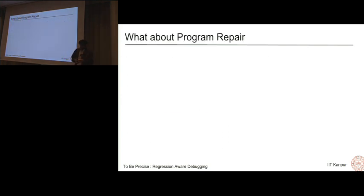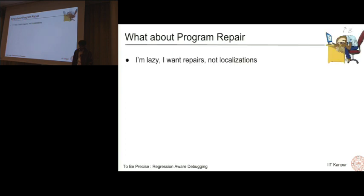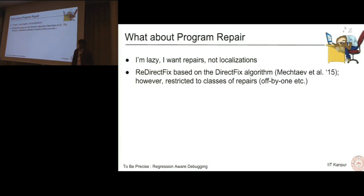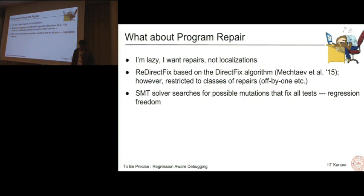We actually did not just explore bug localization, we actually also explored bug repair with Tintin. The idea is that I am lazy, I do not want localizations, I want repairs. We implemented DirectFix which is based on the DirectFix algorithm by Mechtaev et al in 2015. We however restricted to common classes, very simple classes of repairs which is off by one or N or say incorrect relational operators, incorrect logical operators. Then what the algorithm does is it employs a SAT SMT solver for searching through the mutation space to find the repair which fixes all the tests. We are guaranteed regression freedom in this case for the set of passing test cases you used. However, the formula can blow up. The way the algorithm achieves this is if you have N tests, it will create N copies of the entire program as a logical formula, take a conjunction and then try to find a solution. As you increase the number of tests, the formula blows up pretty quickly.